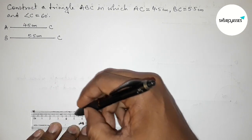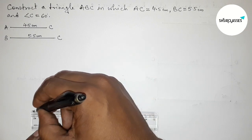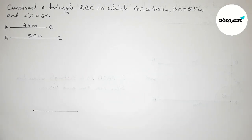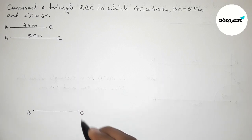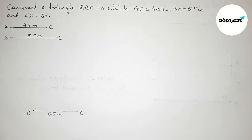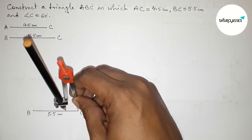Now we have to draw the side BC equals 5.5 centimeters. Starting from zero, this is the 5.5 centimeter line segment. Taking point B at one end and point C at the other end, so BC equals 5.5 centimeters.